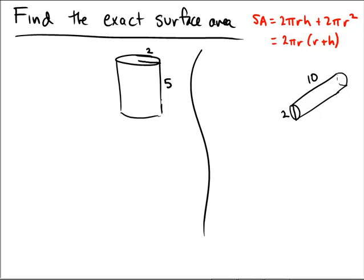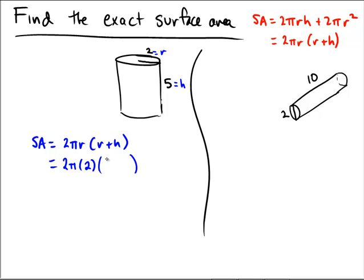The first problem is a cylinder labeled with a height of 5 and a radius of 2. Let's use the factored form since it's a bit less work. So the surface area is 2πr(r + h), which in this problem becomes 2 × π × 2 × (2 + 5).